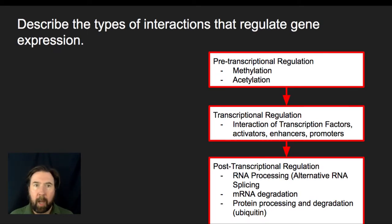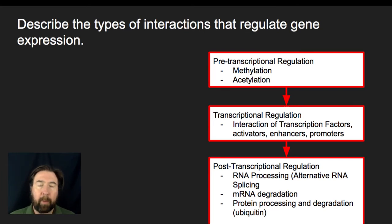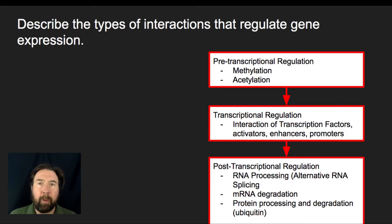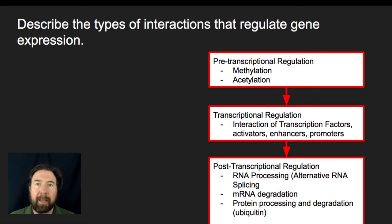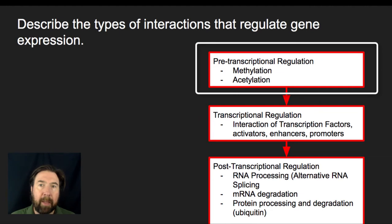So first, let's talk about the types of interactions that regulate gene expression. This will differ a little bit whether we're talking about a cell that has a nucleus or one that doesn't. For this particular case, I'm going to talk about cells that have a nucleus. As a broad category, I'm going to break these into three big groupings. The first are regulations that can occur before transcription, or pre-transcriptional regulation. These would be things like methylation or acetylation of histones, or what we sometimes call histone modification.